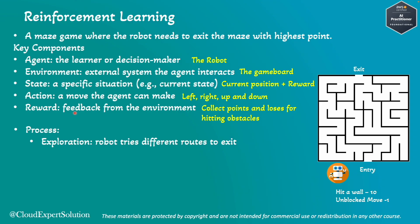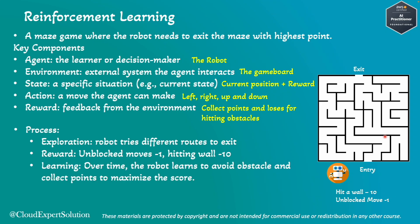In terms of reward, the robot earns points: hitting a wall results in minus 10 points, and an unblocked move results in minus 1 point. In the exploration phase, the robot does not know the path from entry to exit — it may hit walls or get blocked — but through this process it learns the best possible route. Over time, the robot learns to avoid obstacles and collect points to maximize the score.